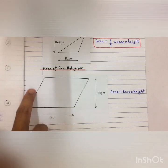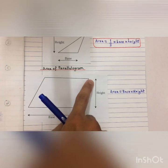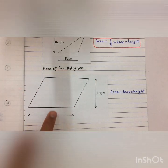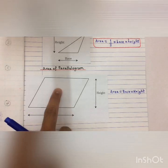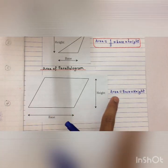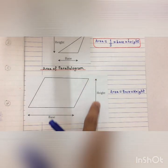For a parallelogram, you have two parallel sides above and below, and the sides are also parallel. To find the area of this parallelogram, you simply take the base and then times the height.